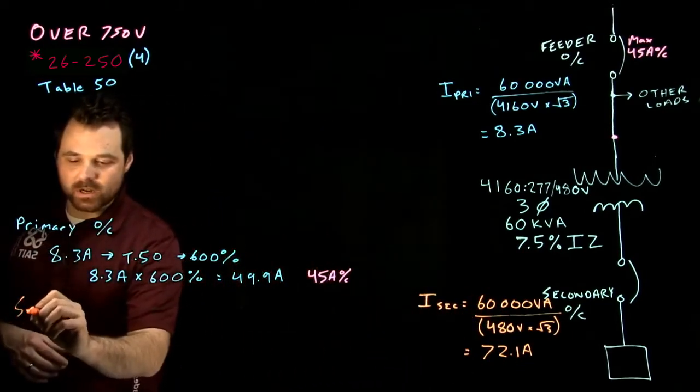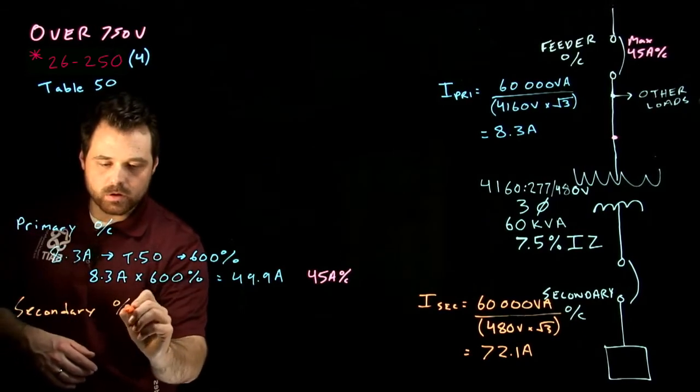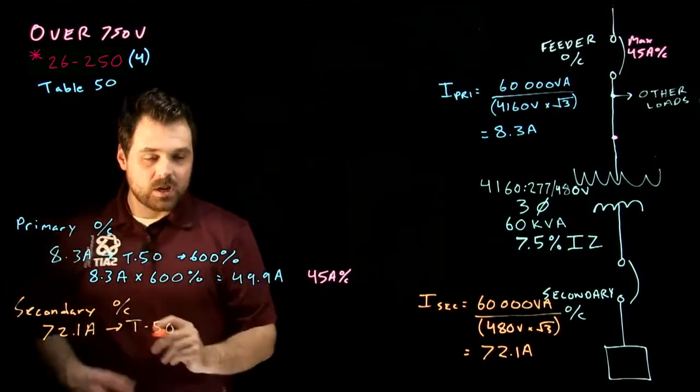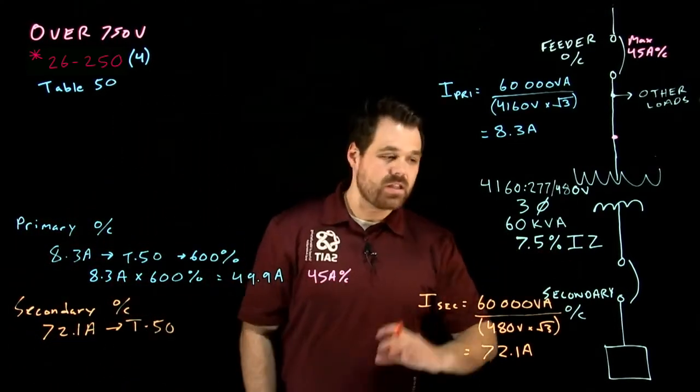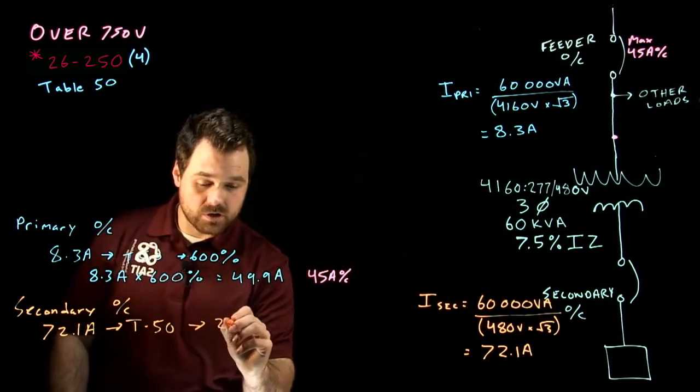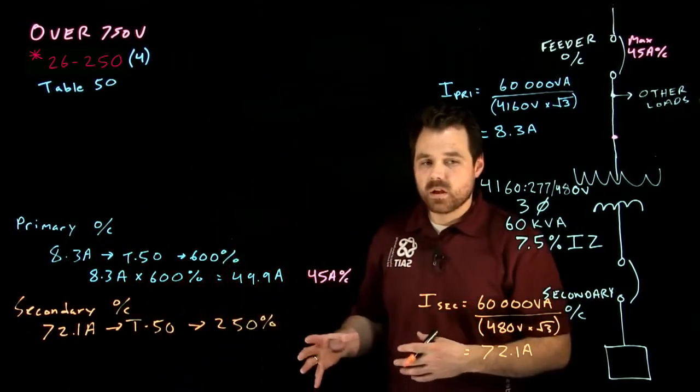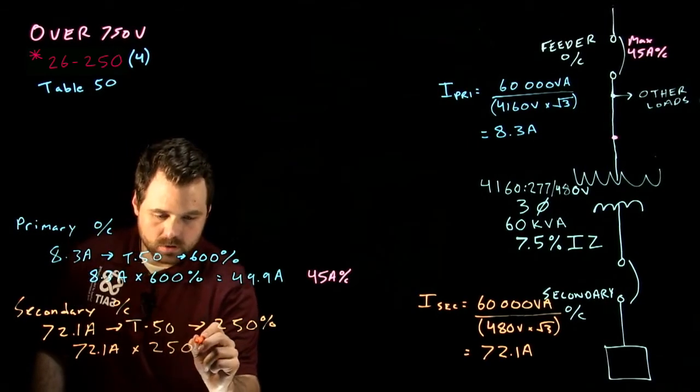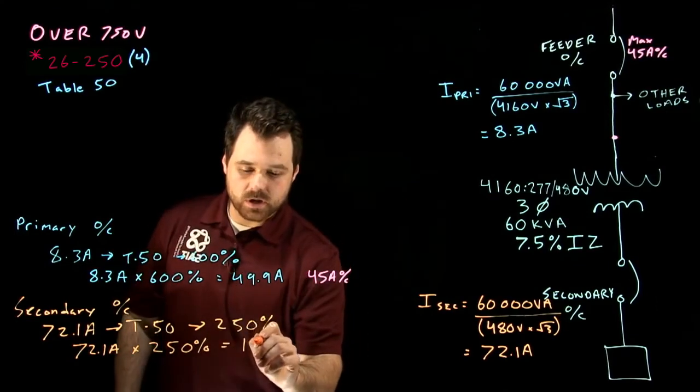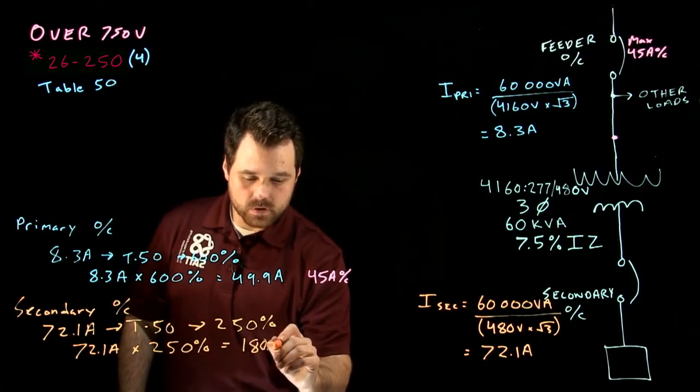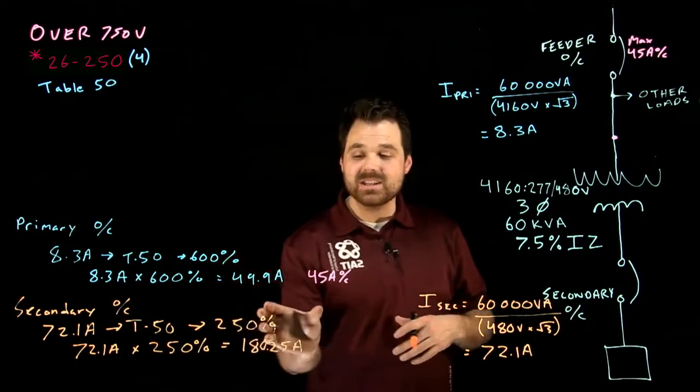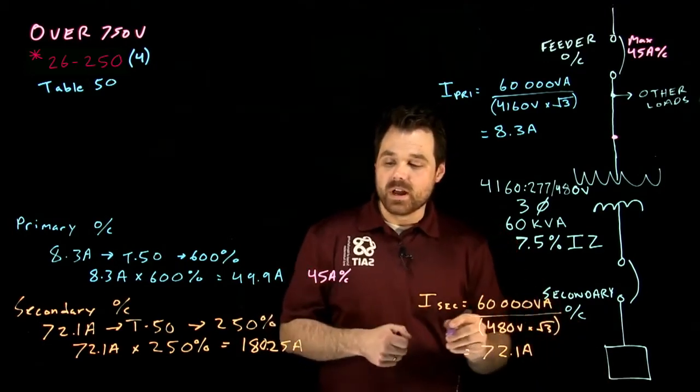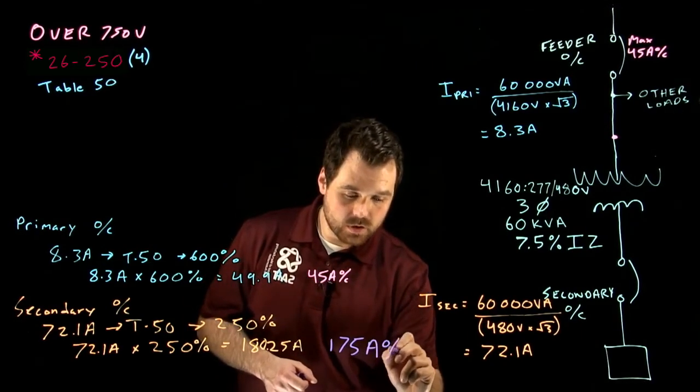With that information, for our secondary OC, we're going to take our 72.1 amps and take that to table 50. Now, based on our 7.5% IZ and the voltage, and the fact that we are using a circuit breaker, it tells us we can use 250% of the rated secondary current. So we go 72.1 amps times 250%. That is going to give us 180.25 amps. Our overcurrent cannot exceed this value, much like the primary, which means when we go to table 13 to size our overcurrent device, we are going to end up with a 175 amp OC on the secondary.